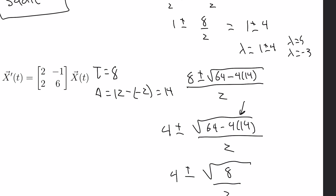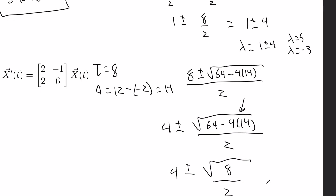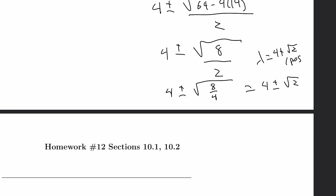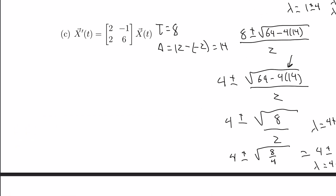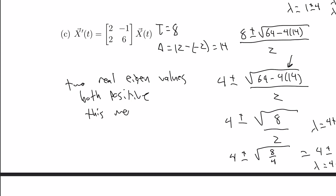Either way we get two positive values for lambda. Lambda equals four plus root two, which is positive, and lambda equals four minus root two, which is also positive. So we have two real eigenvalues and both are positive, which means we have an unstable node.